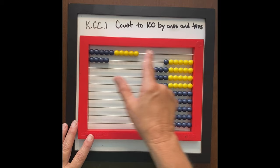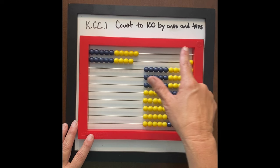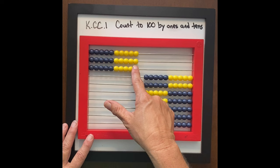Continuing to count by ones using that format: 1, 10, 4 — 1, 10, 5 — 1, 10, 6 — 1, 10, 7 — 1, 10, 8 — 1, 10, 9 — then 2, 10.